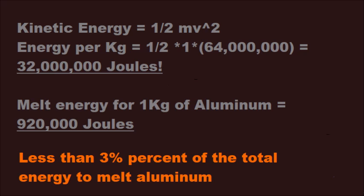Satellites are made up of many materials, but consider one of its major components, aluminum. It takes about 920,000 joules of energy to melt one kilogram of aluminum, less than 3% of the total kinetic energy each kilogram of the satellite contains as it falls to Earth.